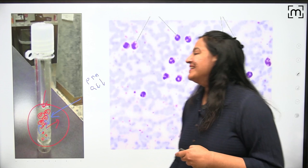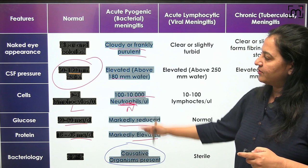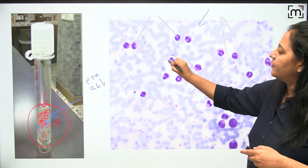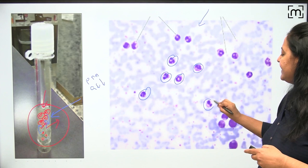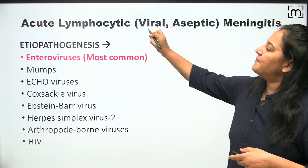If you do gram staining or culture you can find the causative organism. Based on these six investigations you can diagnose acute pyogenic bacterial meningitis. On the microscopic slide, you can appreciate the multi-lobated nucleus — most cells are neutrophils, which is the typical diagnostic picture of acute bacterial meningitis.